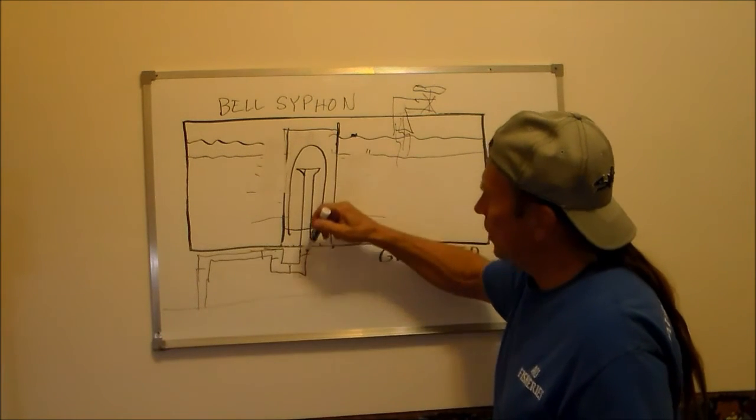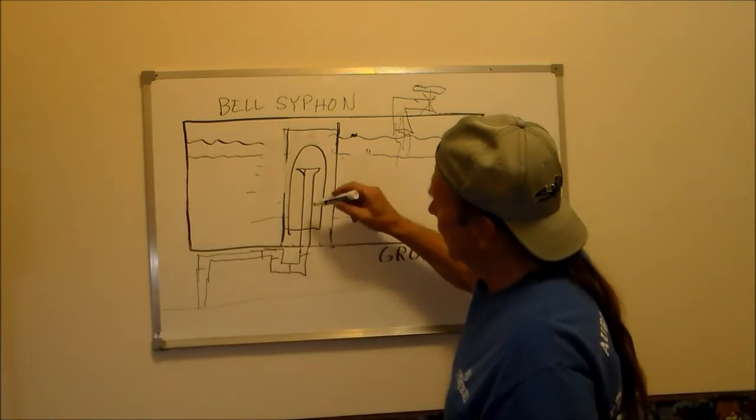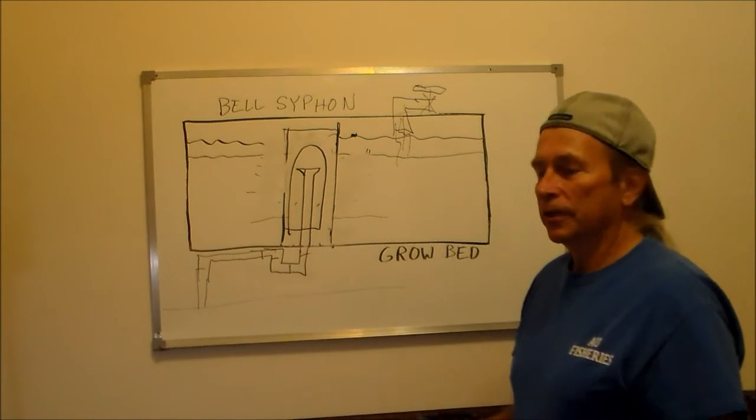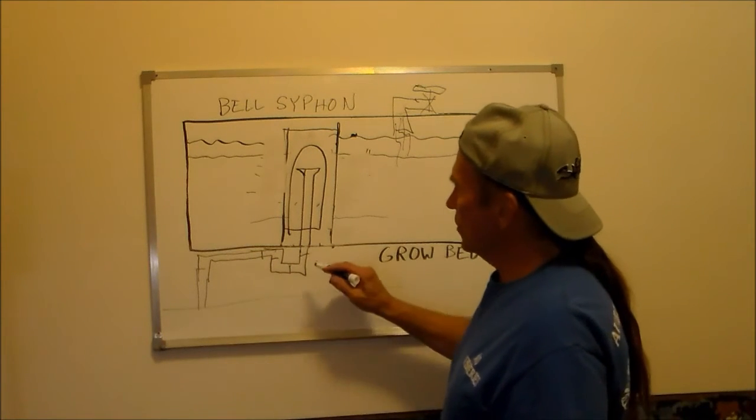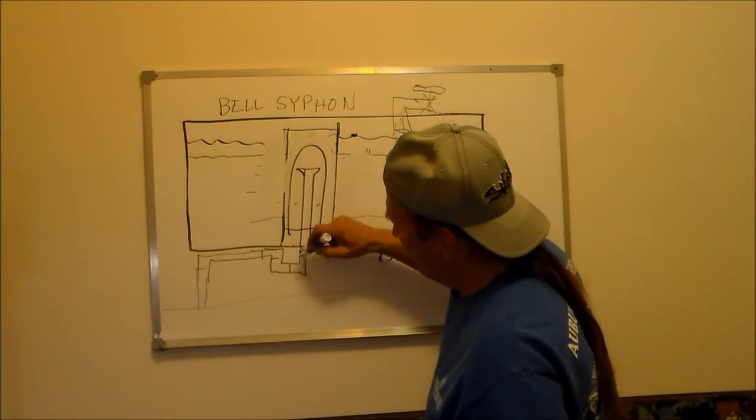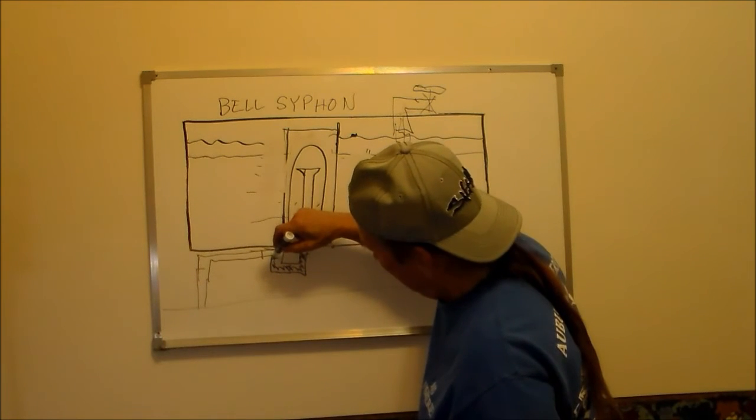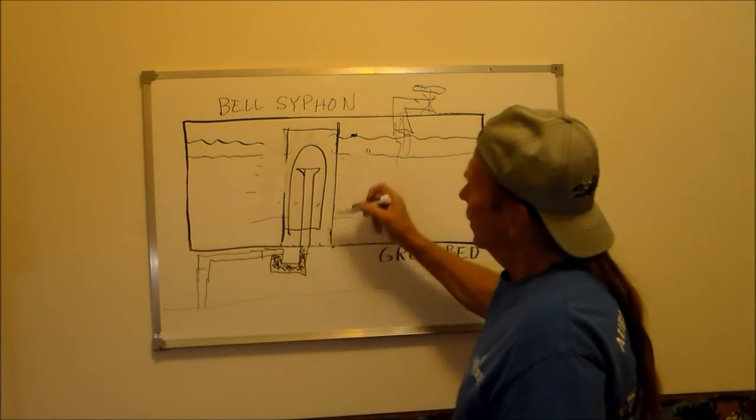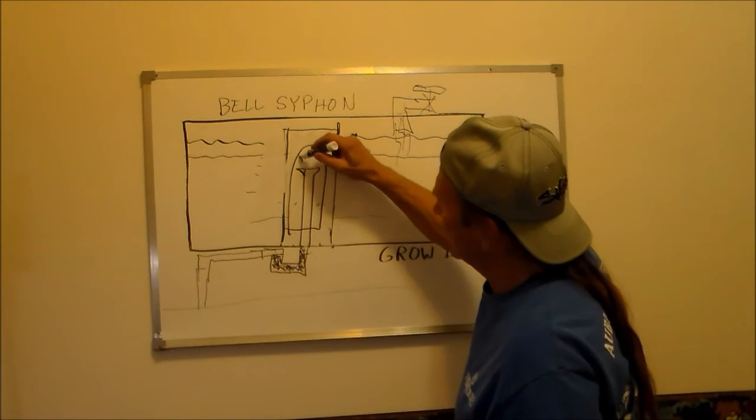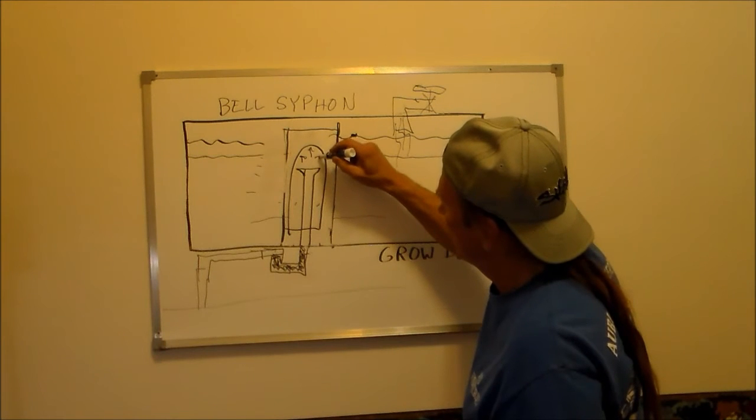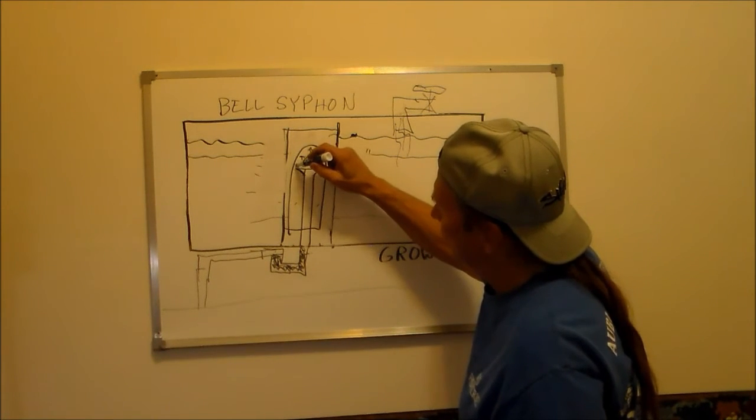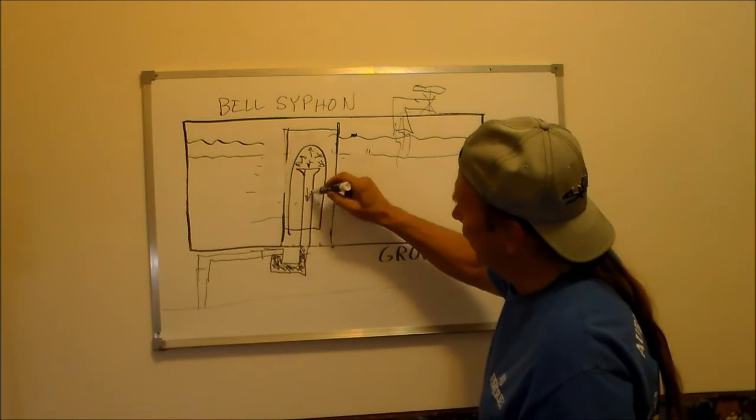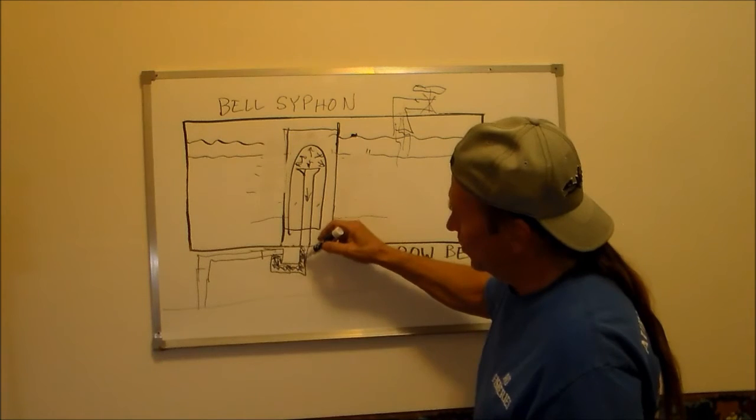What I found out once this action starts working, water comes in through here, starts flowing up. When it fills here and starts coming down, this bell wants to float. And the reason it wants to float is you have water full in here up to this level. Now you have air pressure exerting in here.